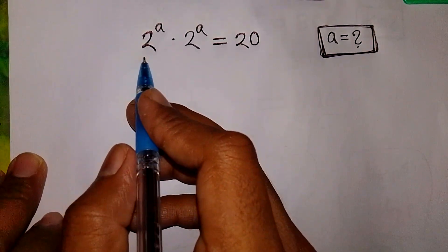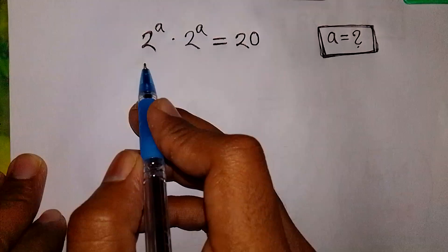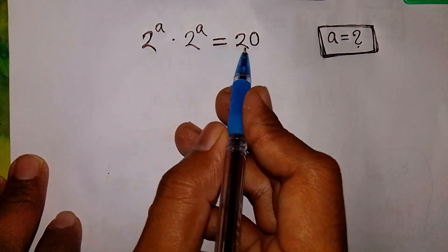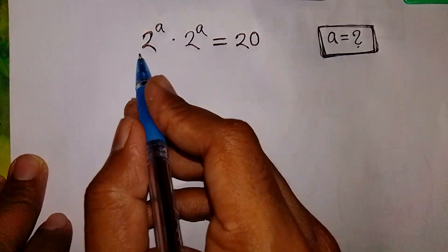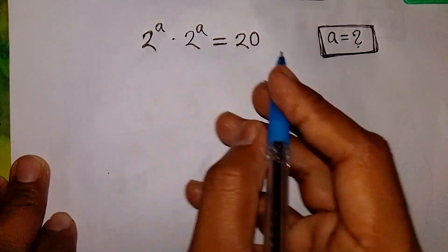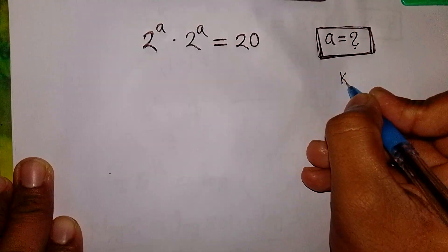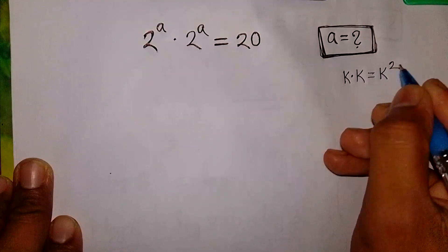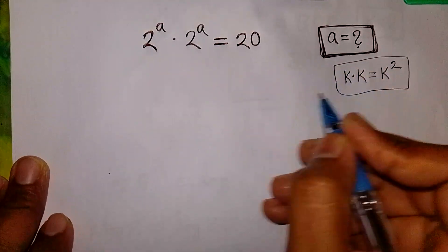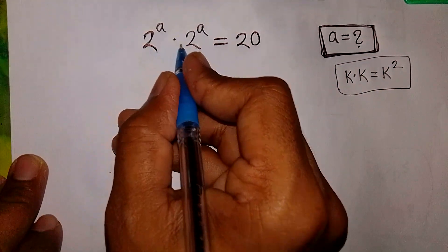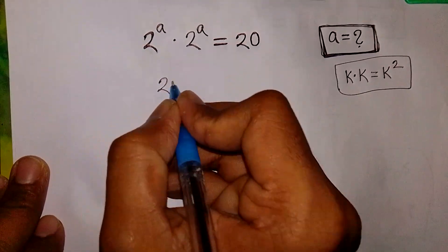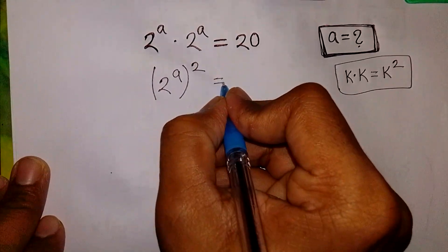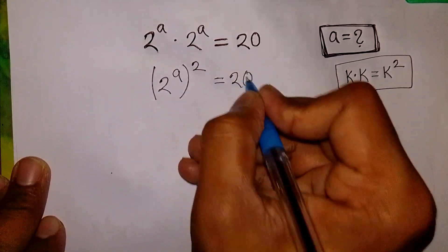Can you solve this algebra problem: 2 power A times 2 power A is equal to 20? Find the value of A. First, we recognize that in the form of K times K is equal to K squared, so this times this is the same as 2 power A whole square is equal to 20.